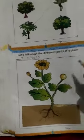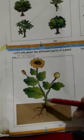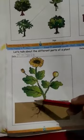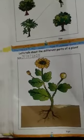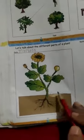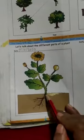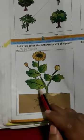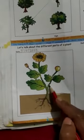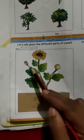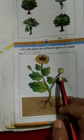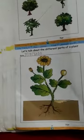So, got it students? This is a plant and these are the parts of a plant. First, here is root. After that, shoot. This is leaf, this is stem, this is bud, this is flower, and this is fruit.